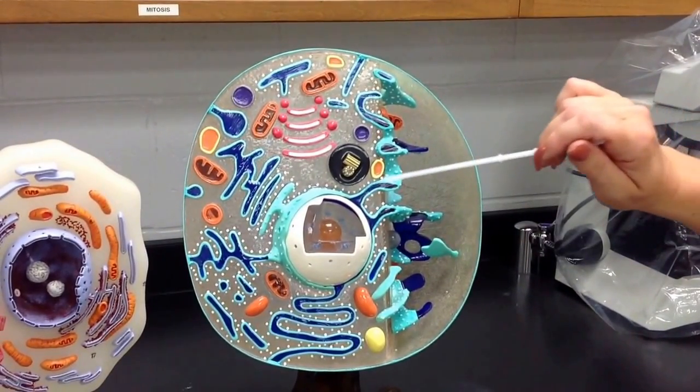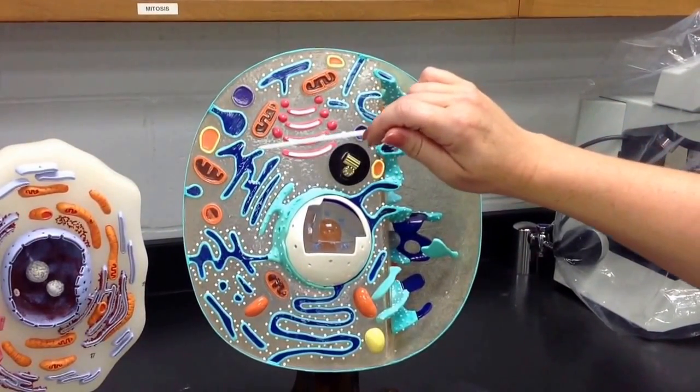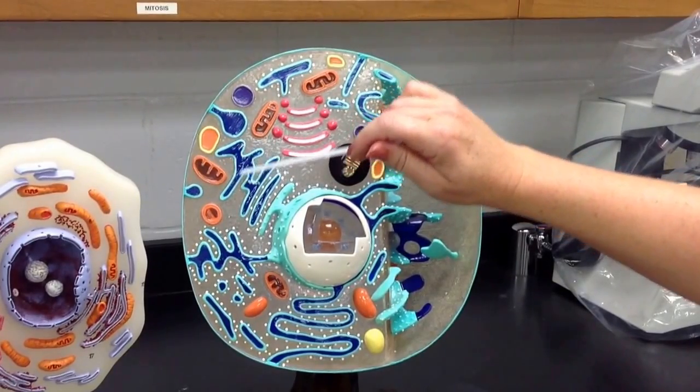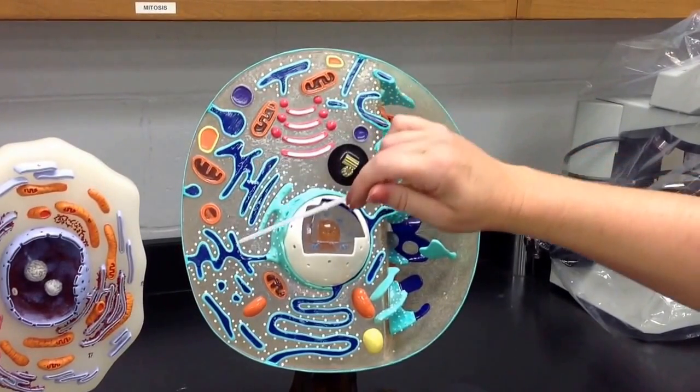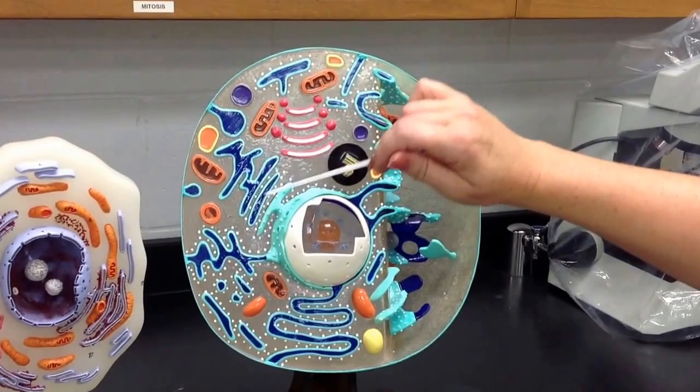Very similar to the rough endoplasmic reticulum but without the white dots is the smooth endoplasmic reticulum. It looks just like the rough but it doesn't have the ribosomes on it.